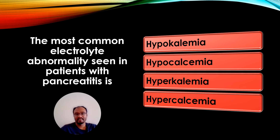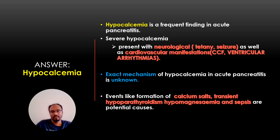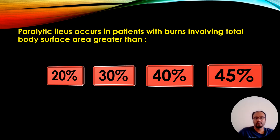The next question: The most common electrolyte abnormality seen in patients with pancreatic disease. Options: hypokalemia, hypocalcemia, hyperkalemia, or hypercalcemia. The correct answer is hypocalcemia. Hypocalcemia is a frequent finding in acute pancreatitis. Severe hypocalcemia can present with neurological manifestations like tetany or seizures as well as cardiovascular manifestations like congestive cardiac failure or ventricular arrhythmias. The exact mechanism is unknown, but formation of calcium soaps, transient hypoparathyroidism, hypomagnesemia, and sepsis are potential causes.